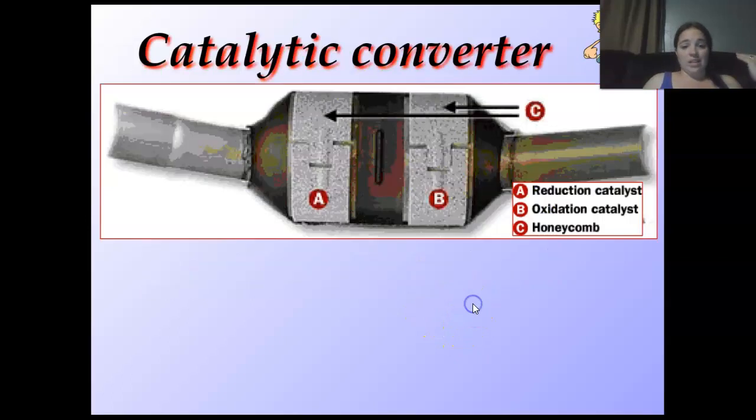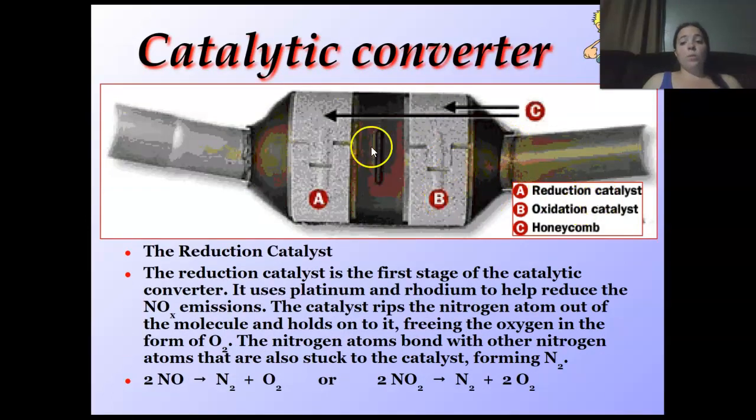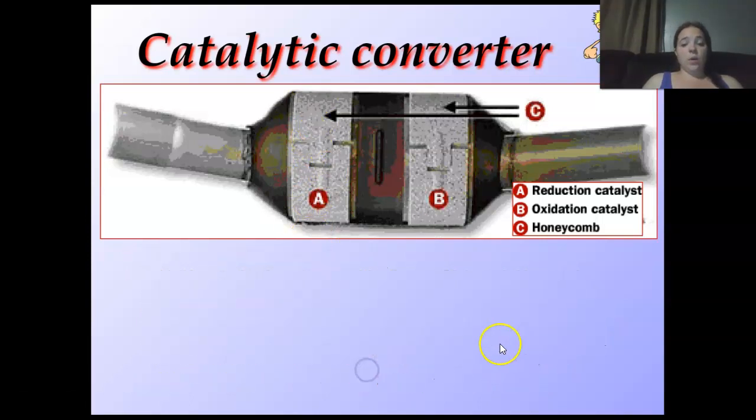What does it do? First off, we have reduction catalysts, oxidation catalysts, and a honeycomb. First, the reduction catalysts is the first stage. It lowers the NOx emissions. It rips the nitrogens out of the molecule and holds onto it, freeing the oxygens to form oxygen, which you want. The nitrogens then bond with other nitrogens that are also stuck to the catalyst forming N2. You get a lot of nitrogen buildup.